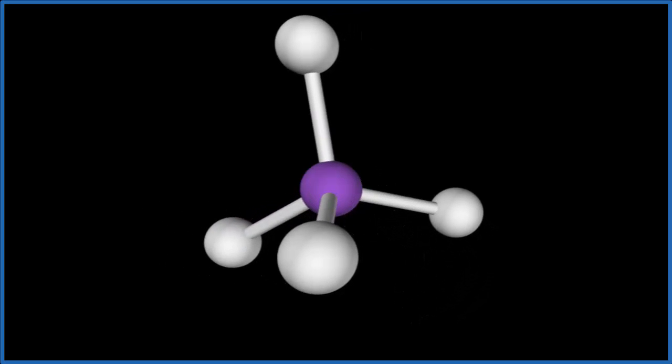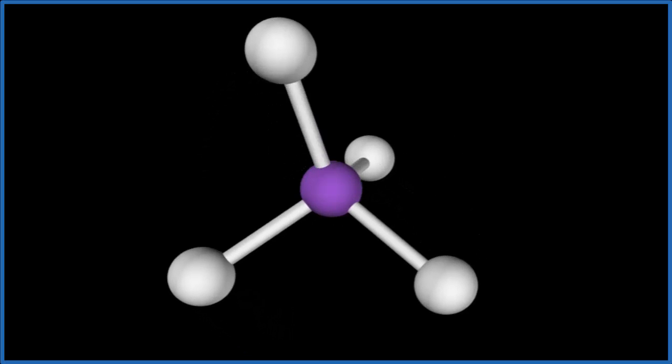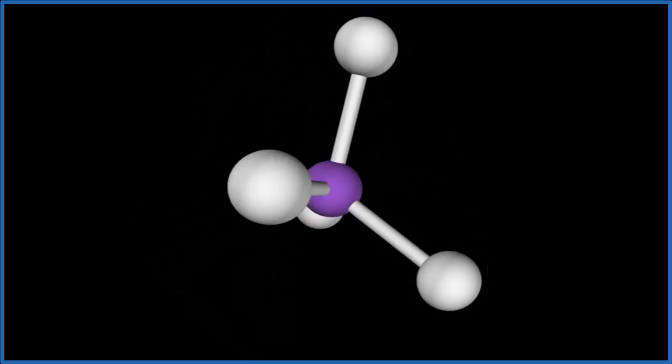You can see that there aren't any lone pairs, so the electron geometry, that's tetrahedral as well. So this is the three-dimensional structure of the ammonium ion. Let's go back to our Lewis structure.